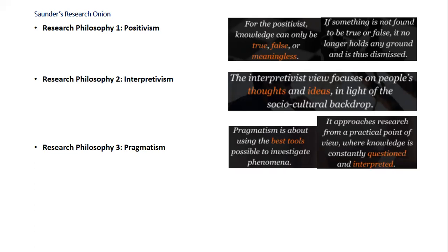An example of pragmatism is the trolley problem — a set of ethical and psychological thought experiments. Participants had to decide either to kill one person to save multiple people or allow multiple people to die to avoid killing one. The experiment can be altered, including details such as one person or a group being a family member or loved one. The fact that the experiment can be altered to suit the researcher's needs is an example of pragmatism — the outcome is more important than the philosophical idea behind the experiment.